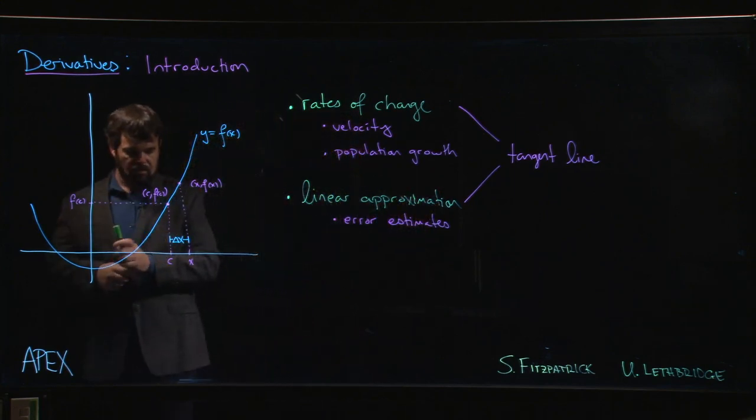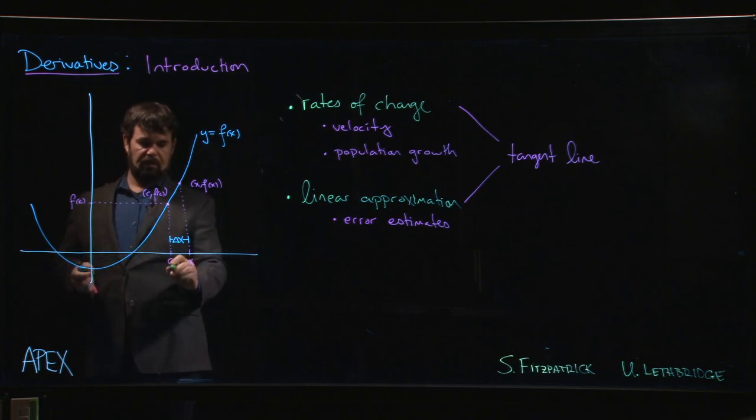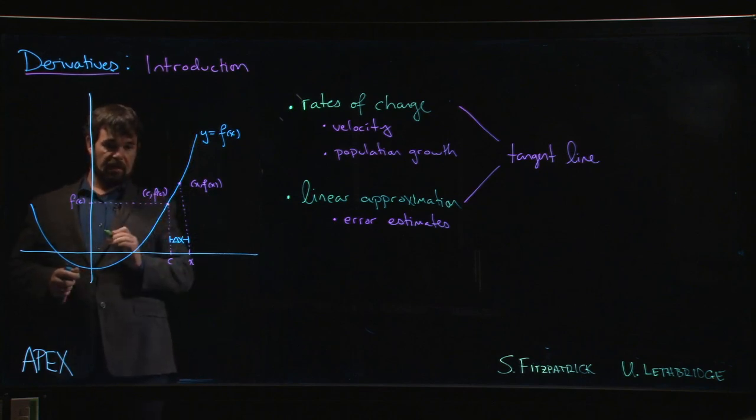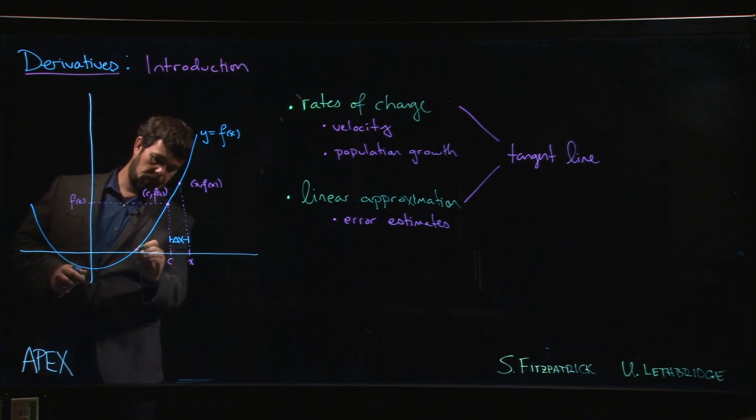These both come into this idea of the tangent line at a point. Here's our graph y equals f of x, and we have this point c. The tangent line is the line that you can draw through this point (c, f of c) that just touches the graph at that point, but not at a second point.